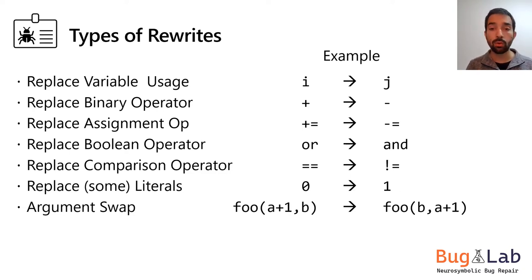We might replace a boolean operator, an or with an and, or an and with an or, and so on. We could replace comparison operators like equals to not equals, greater than, less than, less than or equal, and so on. Yet another big class of bugs that happen.